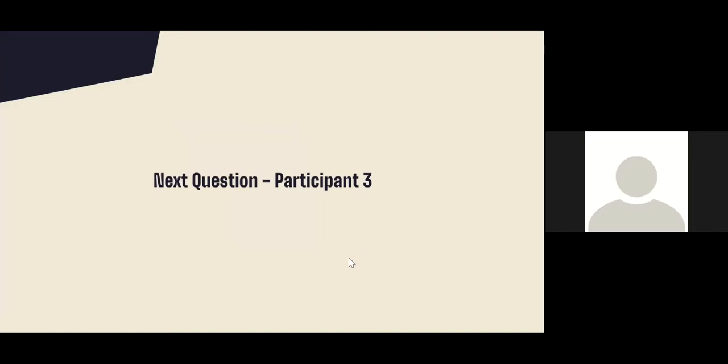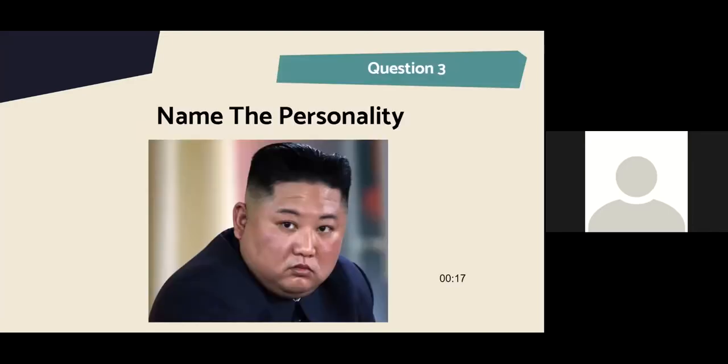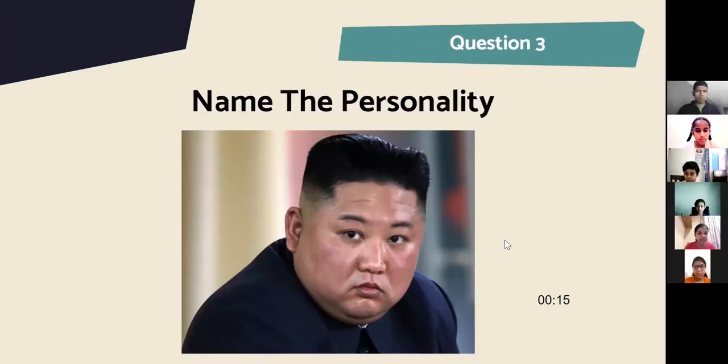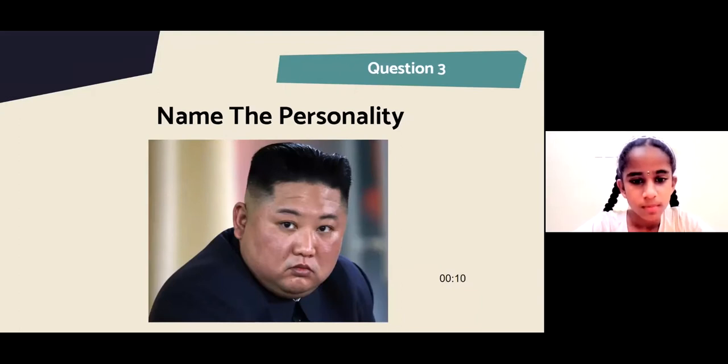So A3, please be ready. Your question is coming up. This is your personality. Very famous leader. I mean, right now also. Supreme leader of a country. XI, King, Pink. What was that? XI, King, Pink. Not exactly. No, I mean, no, it's Kim Jong Un. So that's the wrong answer. So that's A3's turn is done.